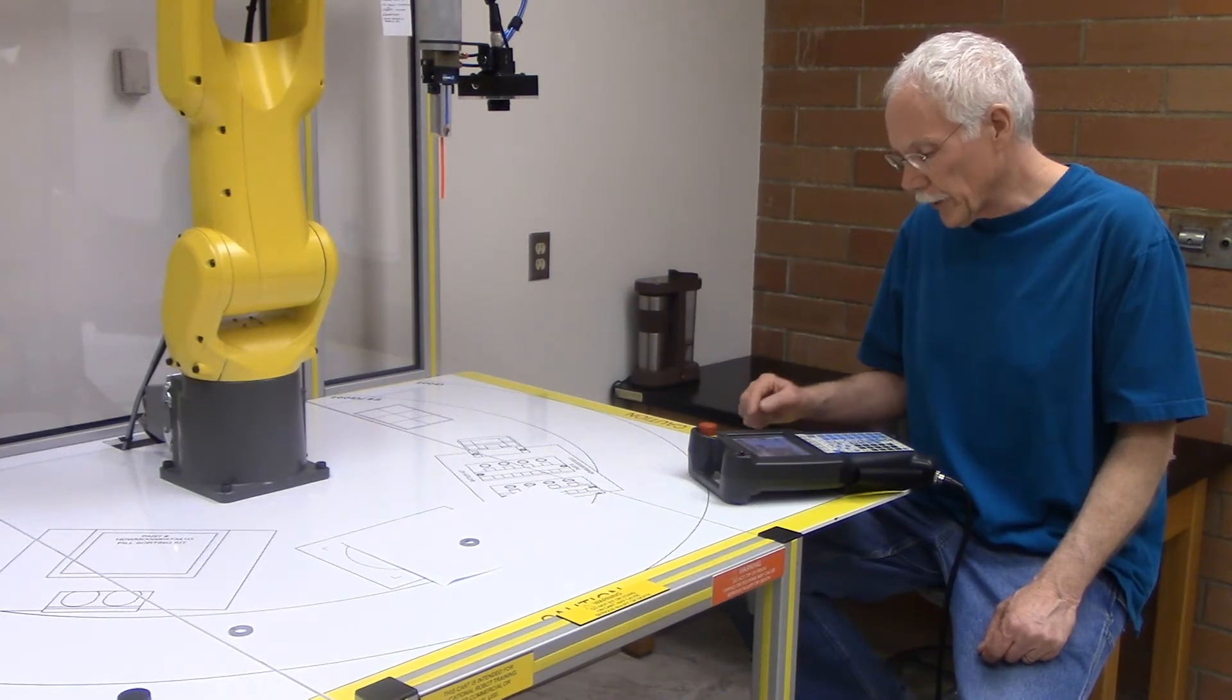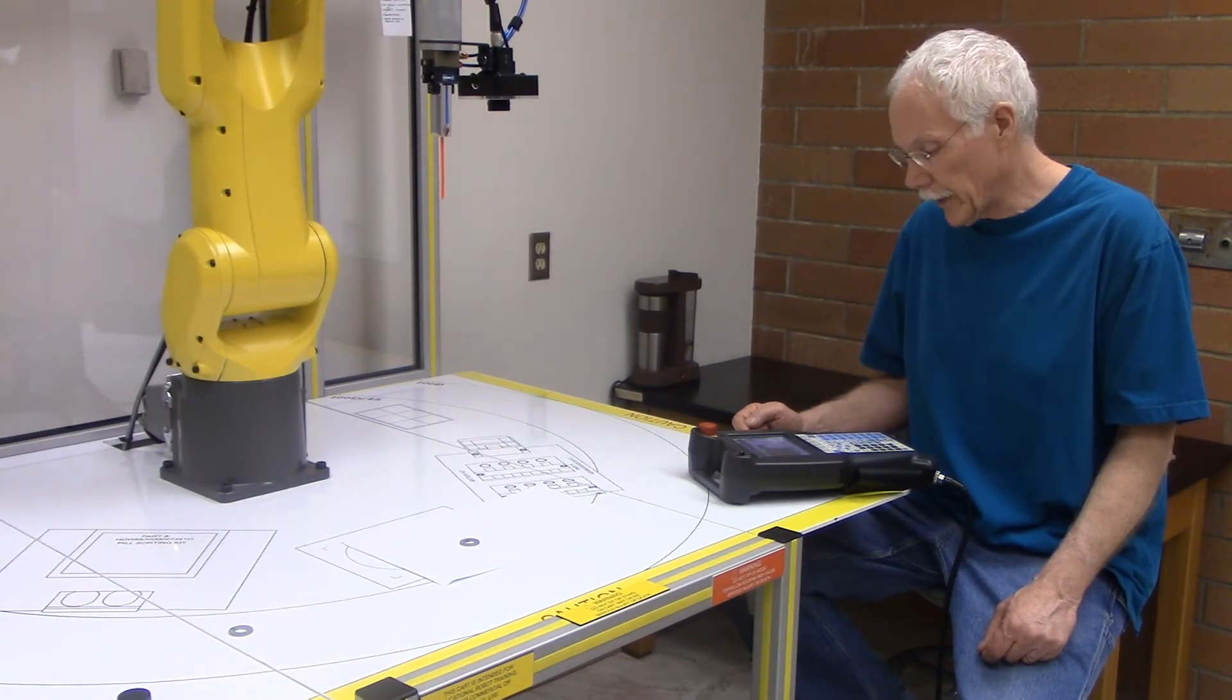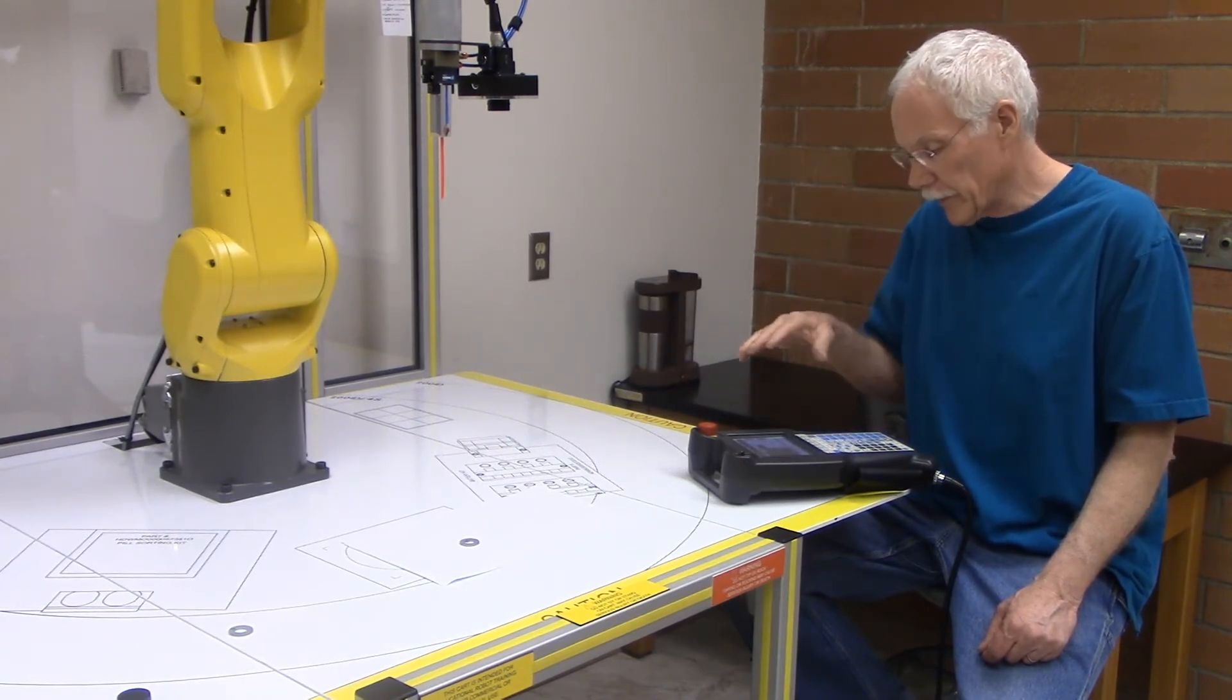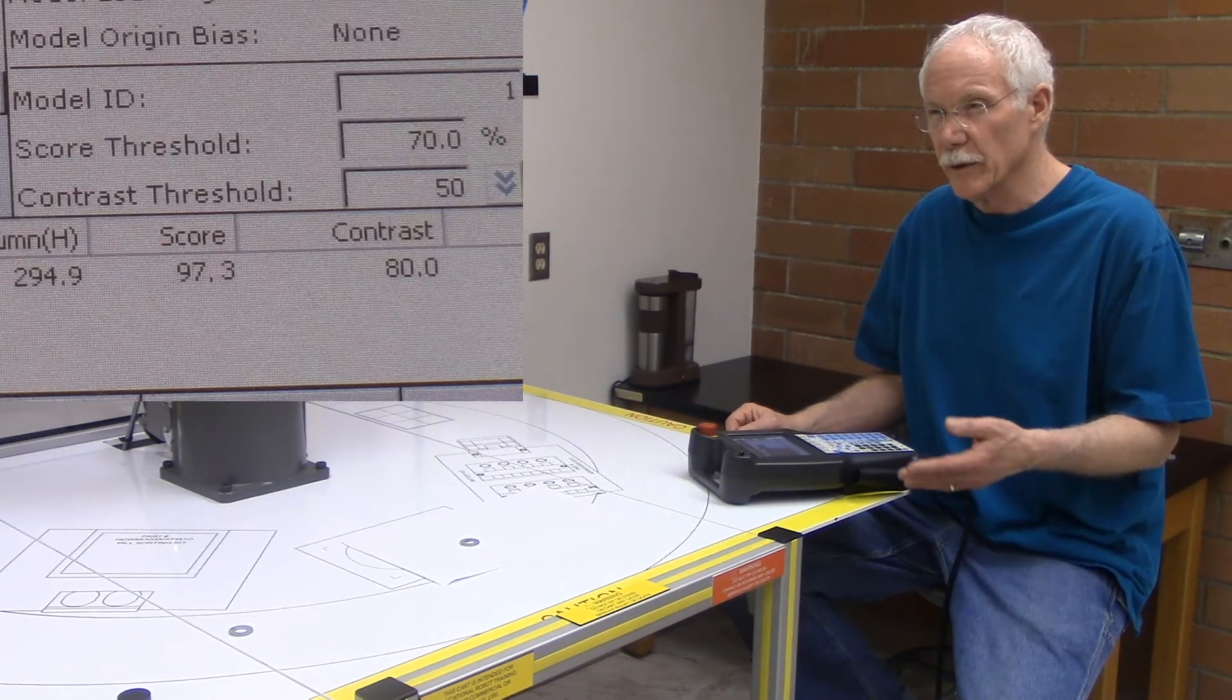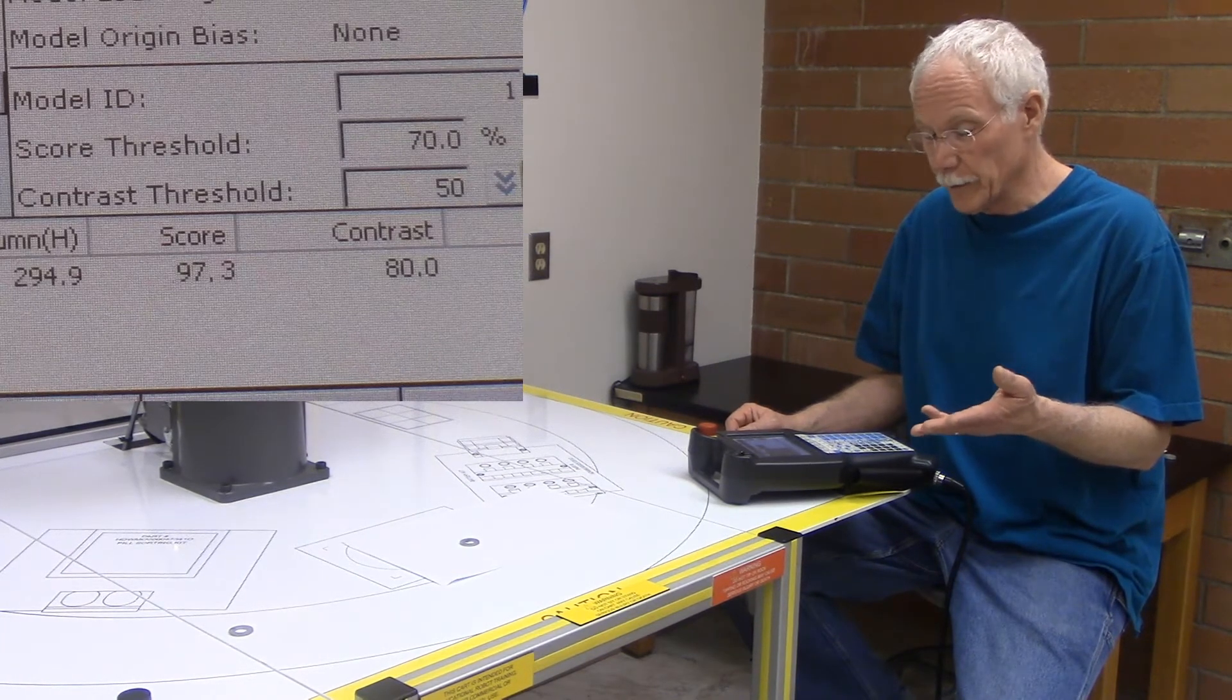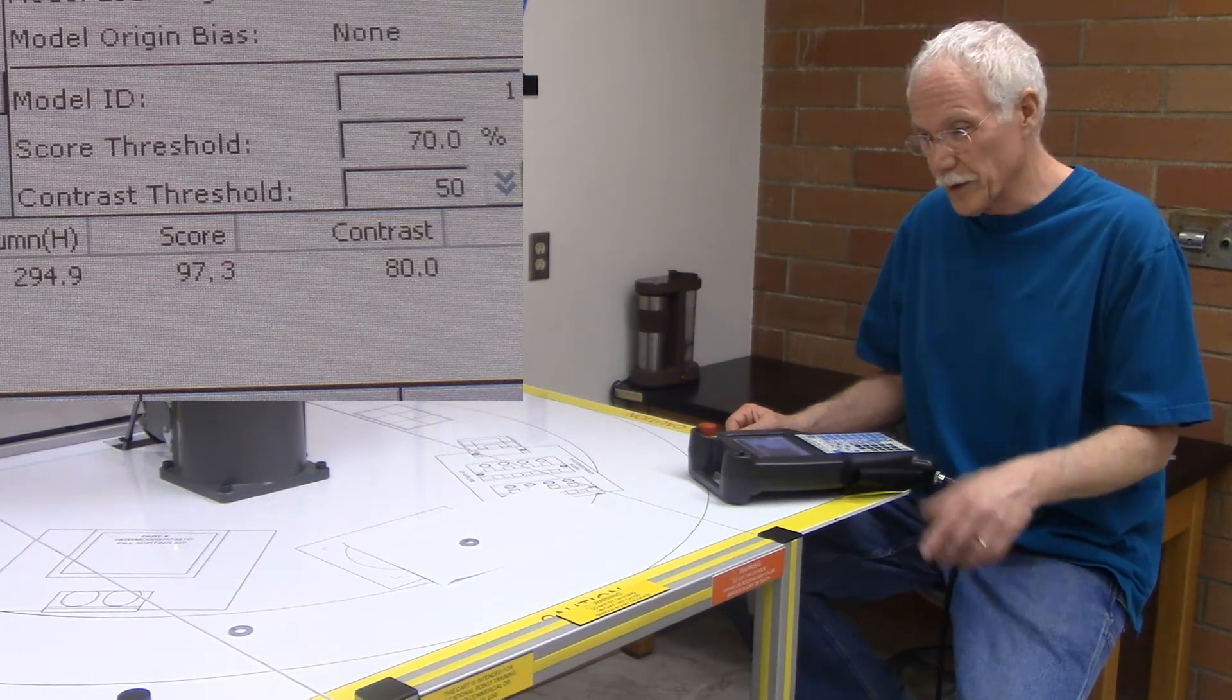The threshold for the score that I used when I edited this process, I left the score at 70%. So it's looking for anything that scores to 70% or better. So basically, I'm just looking for anything that's the size.